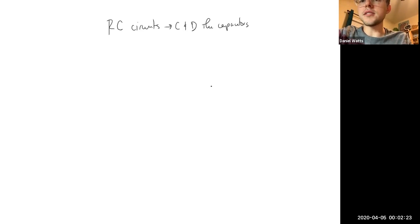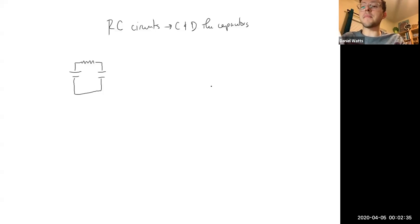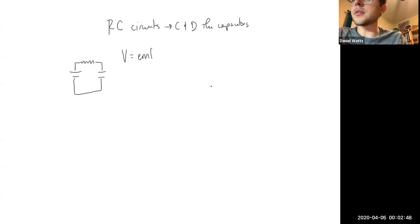We've got our voltage source connected to a resistor connected to a capacitor. So this equation we use here determines how much of the capacitor is charged at certain time periods based upon the voltage and a couple other factors. V, the amount charged of the capacitor, is equal to EMF — the voltage put out by the voltage source — times 1 minus e to the negative time divided by resistance times capacitance.